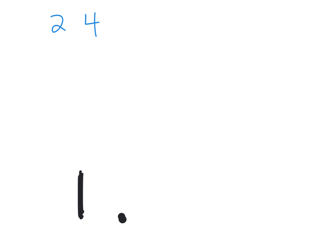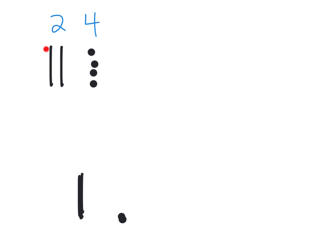So if we wanted to represent the number twenty-four, the way we would represent it using quick tens is: here's our twenty, and then here's our four — one, two, three, four — and it's really straightforward, nothing overly fancy. These are quick references to those rods, those base ten rods of ten cubes stuck together, and then these are the representations of the individual cubes. So there's our quick ten version of twenty-four.